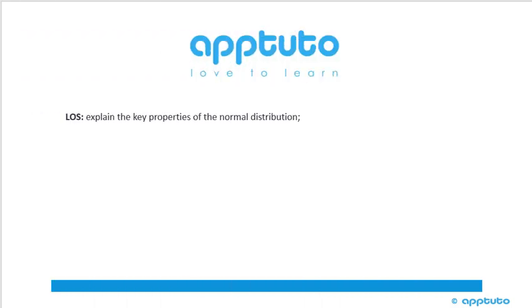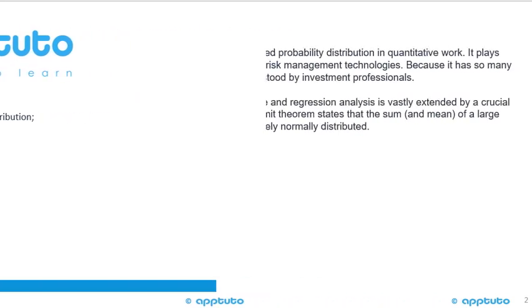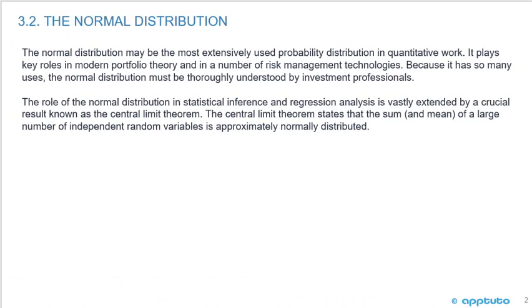This LOS explains the key properties of the normal distribution. The normal distribution may be the most extensively used probability distribution in quantitative work. It plays key roles in modern portfolio theory and in a number of risk management technologies. Because it has so many uses, the normal distribution must be thoroughly understood by investment professionals.